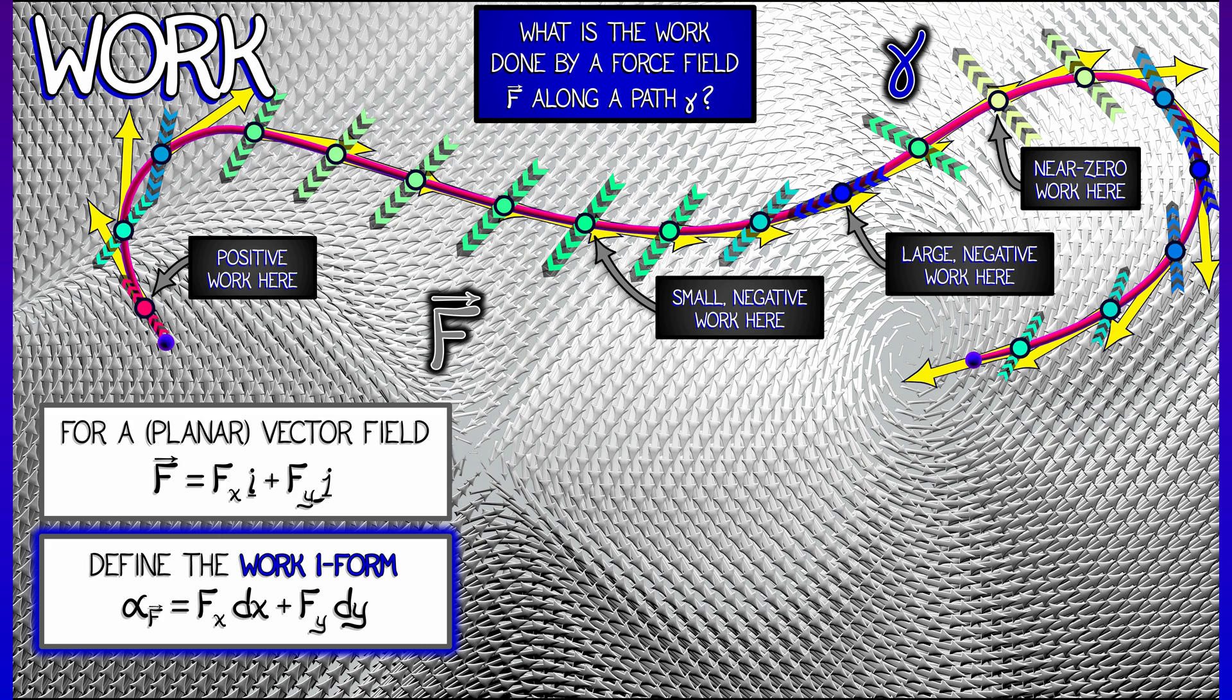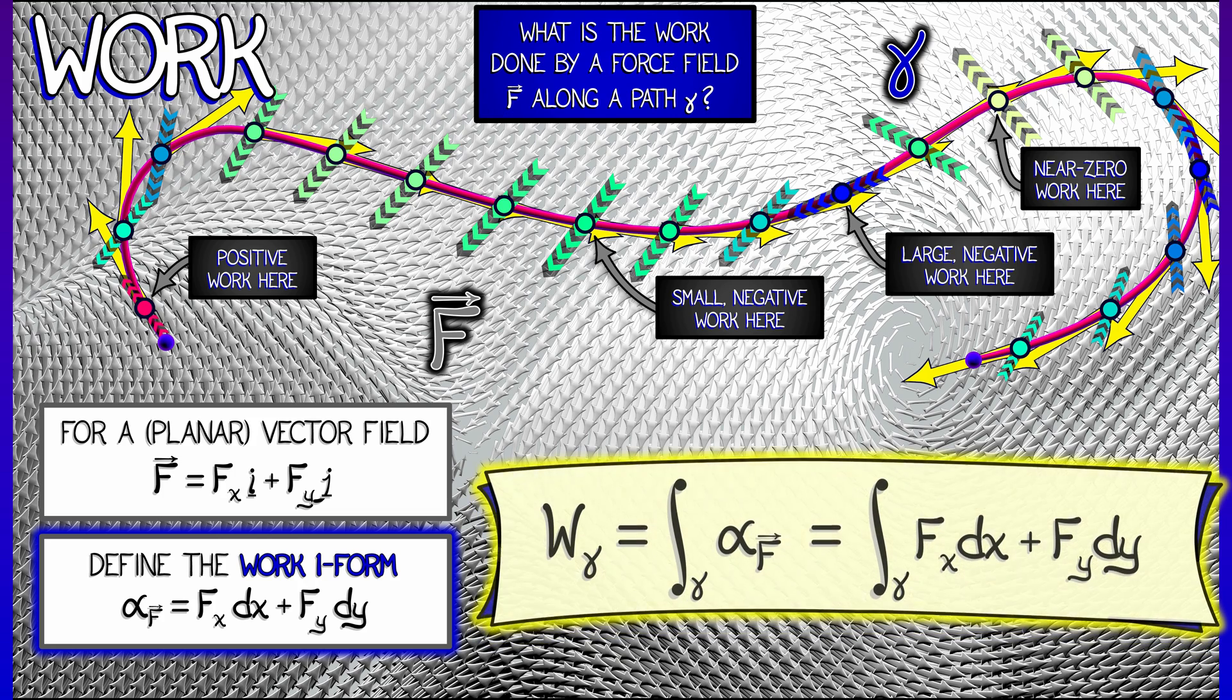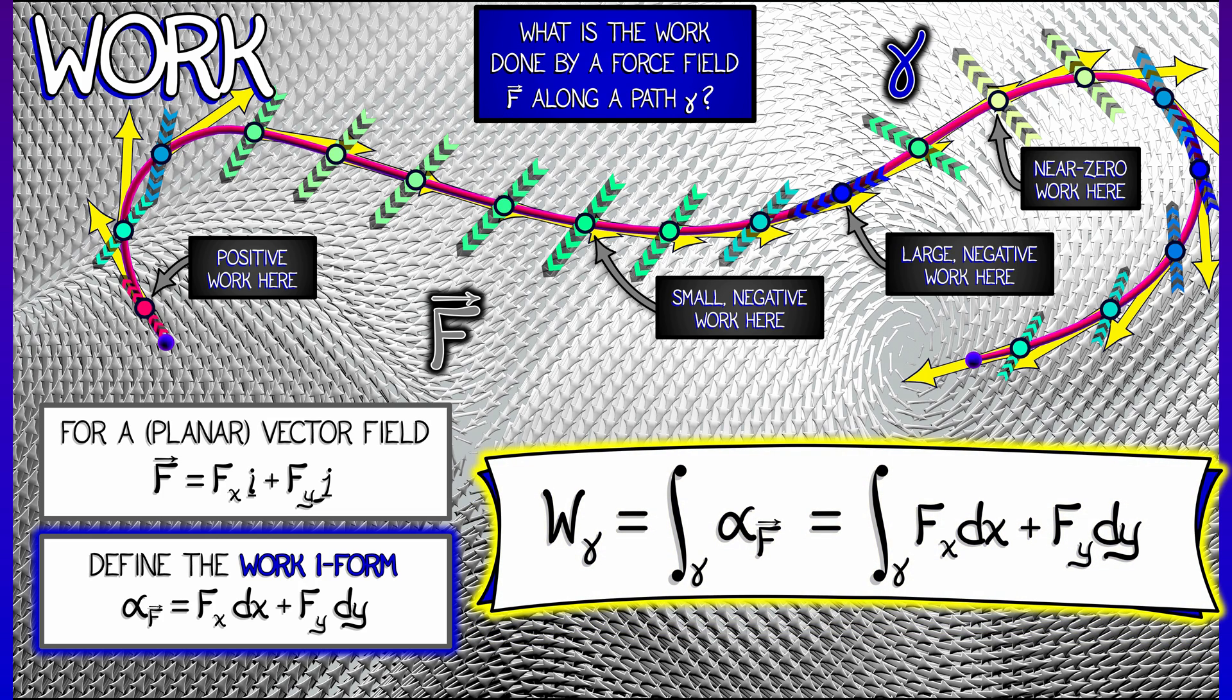The work one-form alpha sub f allows you to compute the network done by the force field along the path by integrating that one-form field over the path gamma. That's how you compute the work done by the field along the path.